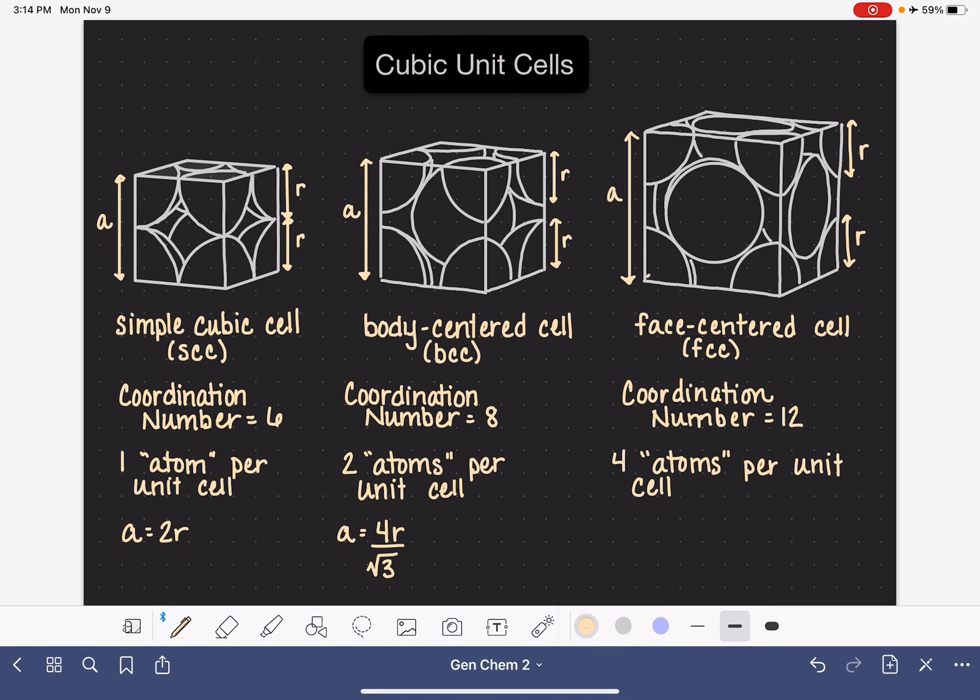Just like in the body-centered cell, we're going to define another distance on this unit cell, and that's going to be the distance across the face of any one side of the cube. And we'll call that B. We'll use Pythagorean's theorem again because we have a right angle right here. So we know that we have side length A and side length A, and then we also have this distance B.